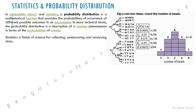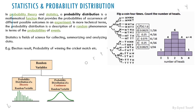Statistics is a field of science for collecting, summarizing, and analyzing data. For example, predicting the result of a cricket match — we now see probability bars during matches showing, say, 90% chance India will win, and as the match progresses, the probability changes based on events and variables.